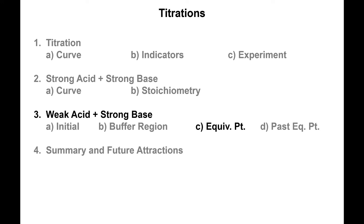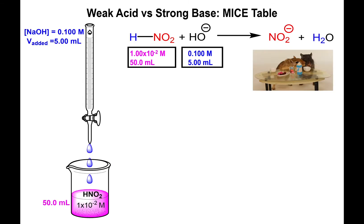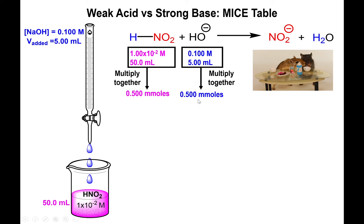Here we are at the equivalence point of a weak acid titrated with a strong base. This particular point in the titration curve occurs when you have added the exact amount of millimoles of base as you have acid to begin with. So if you add 5 mL of hydroxide, you add a total of 0.5 millimoles of hydroxide base, which is equal to the 0.5 millimoles of acid that we had to begin with.